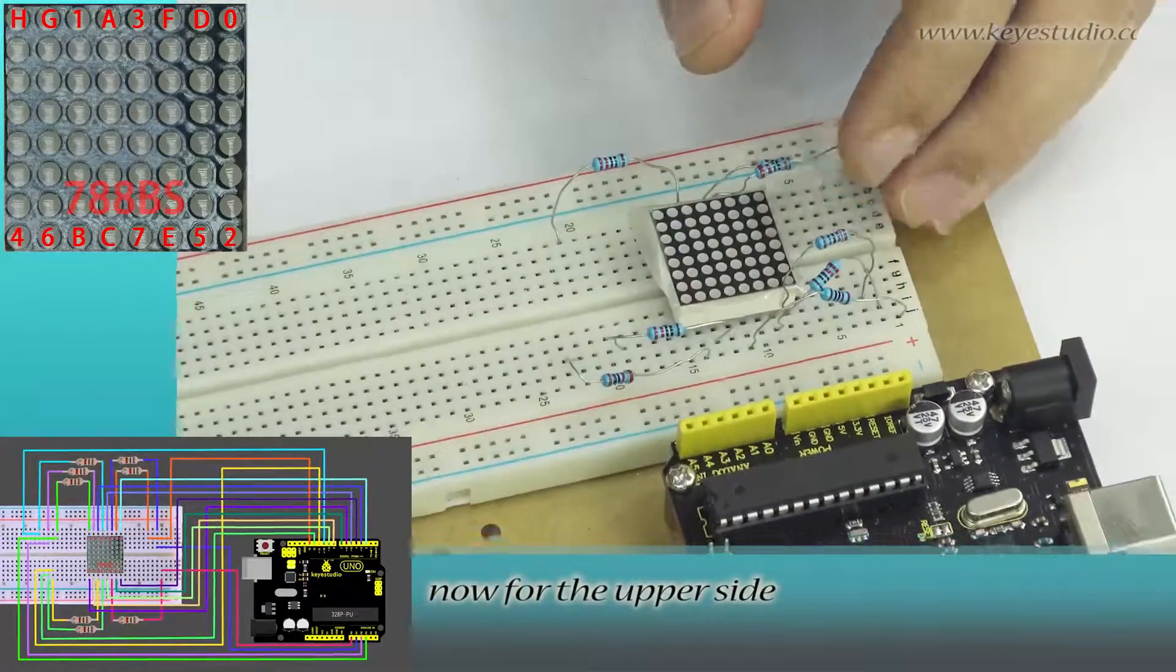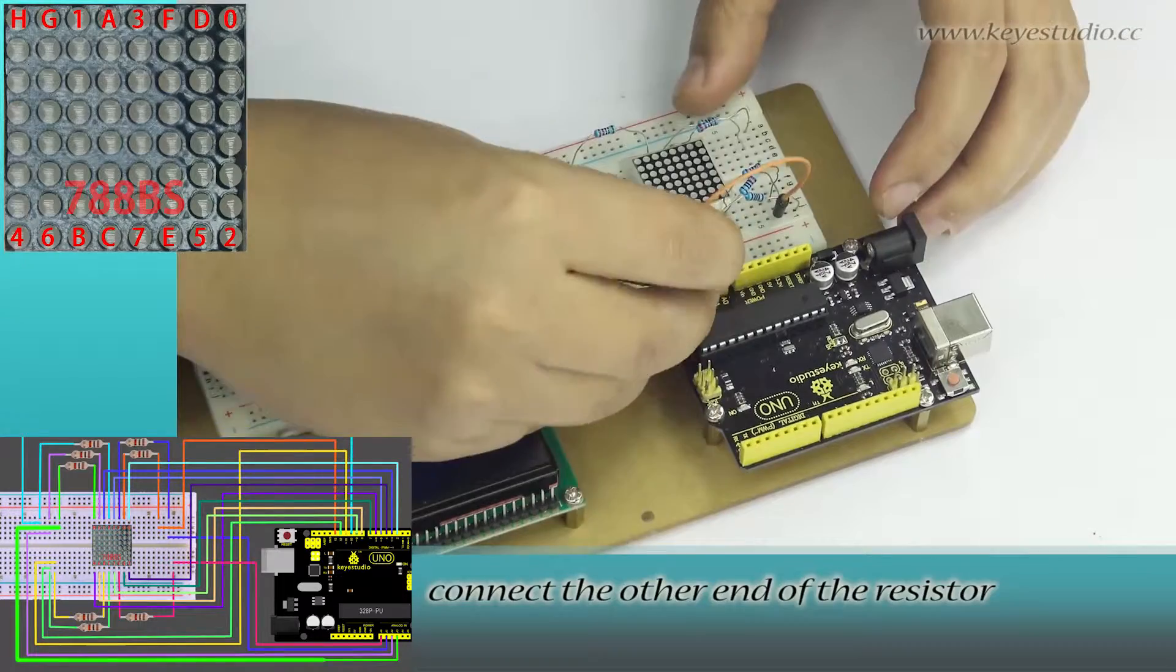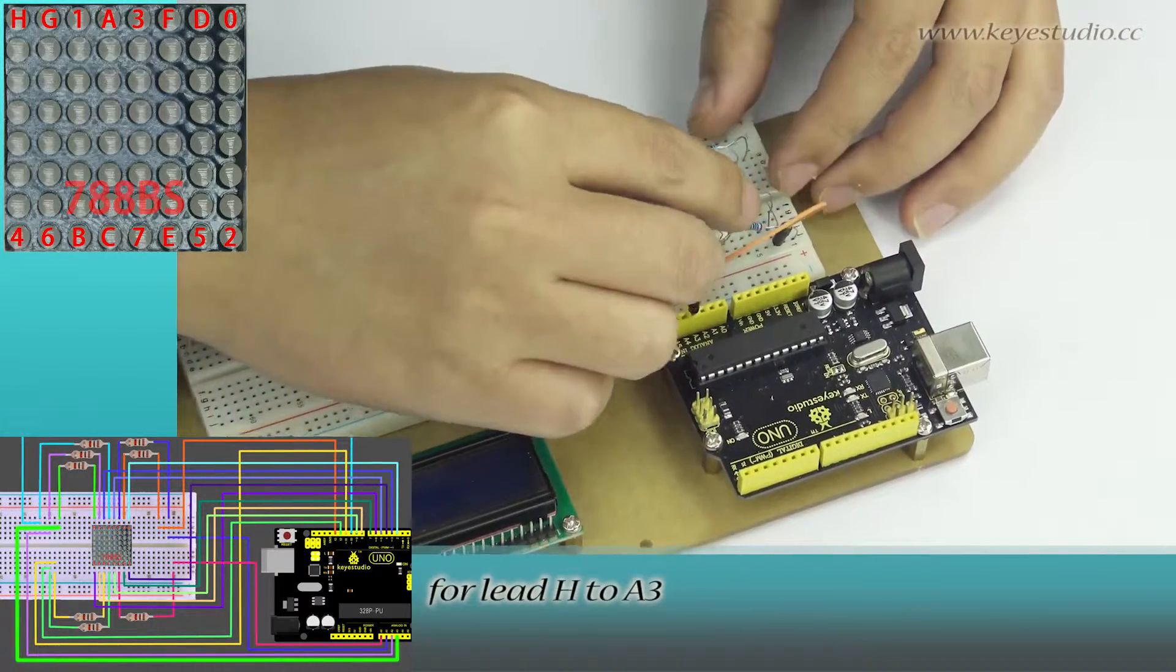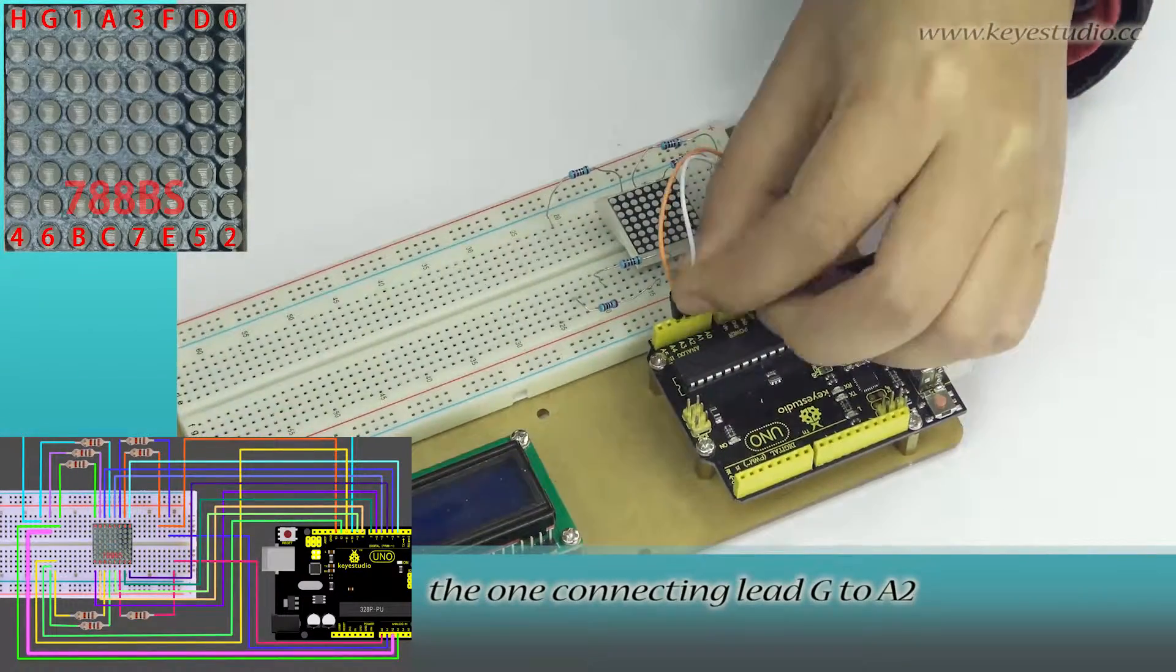Now, for the upper side from left to right, connect the other end of the resistor to lead H to A3. The one connecting lead G to A2. Connect lead 1 to D3.